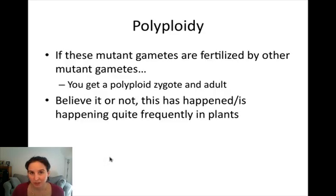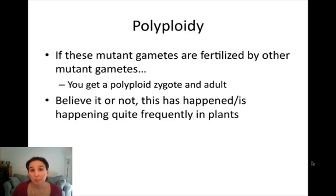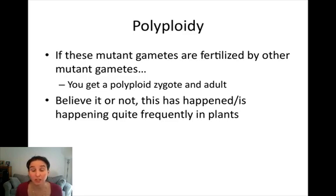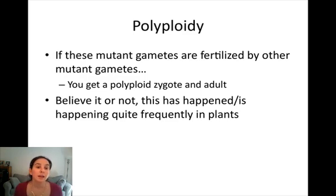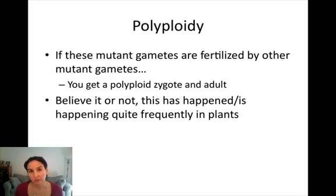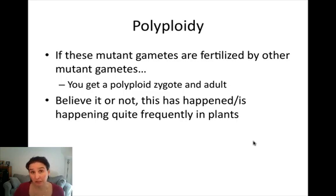If these mutant gametes are fertilized by other mutant gametes, you get a polyploid zygote — a zygote with twice the number of chromosomes it should have. That polyploid zygote undergoes mitosis, cell differentiation, and growth to produce a polyploid adult. It seems like a series of highly unlikely events, but it happens quite frequently in plant populations.